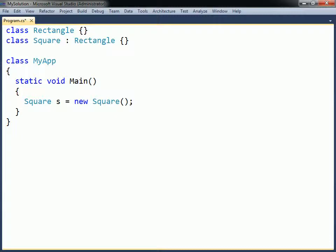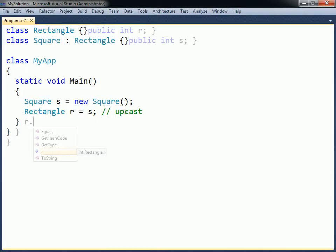If an instance of Square is created, it can be upcast to Rectangle, since the derived class contains everything in the base class. The object is now viewed as a Rectangle, so only Rectangle's members can be accessed.